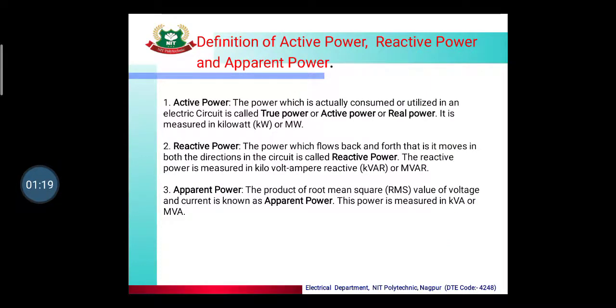We have studied in the previous lecture what power basically is. Power is nothing but the product of voltage and current. If it is DC, then it is simply the product of voltage and current.